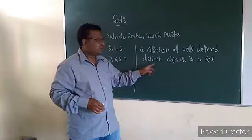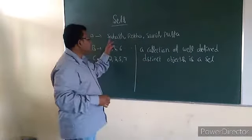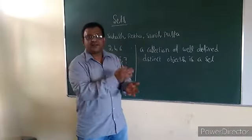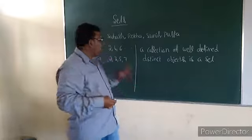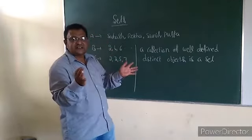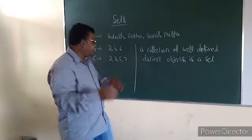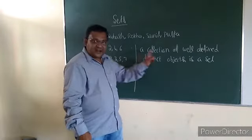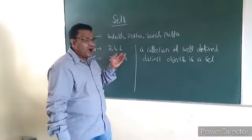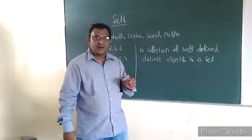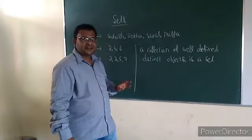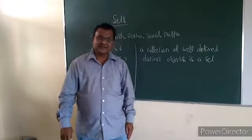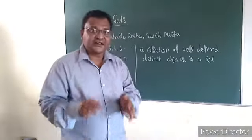And distinct — distinct means Suvash, Rekha, Sunil, Pushpa are all different. We are not repeating any element. Similarly 2, 4, 6 are distinct — different, different. Here also different. So a collection of well-defined distinct objects is a Set. That is the definition of the Set.